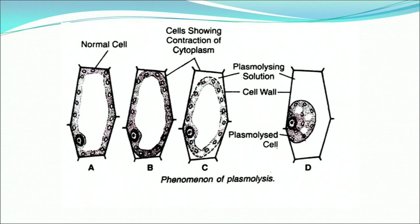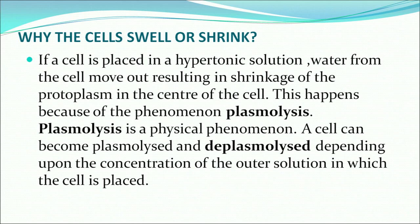Plasmolysis and imbibition are more or less interlinked. Whenever plasmolysis occurs, the cells swell or shrink. If a cell is placed in a hypertonic solution, water from the cell moves out, resulting in shrinkage of the cytoplasm in the center of the cell. This happens because of the phenomenon of plasmolysis, which is a physical phenomenon — along with diffusion and osmosis, all are physical phenomena. A cell can become plasmolysed or deplasmolysed depending upon the concentration of the outer solution.